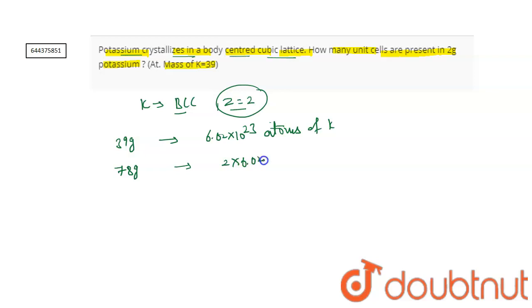In 78 grams, 2×6.02×10^23 atoms, which equals 6.02×10^23 unit cells, because as we know in each unit cell there are two potassium atoms.